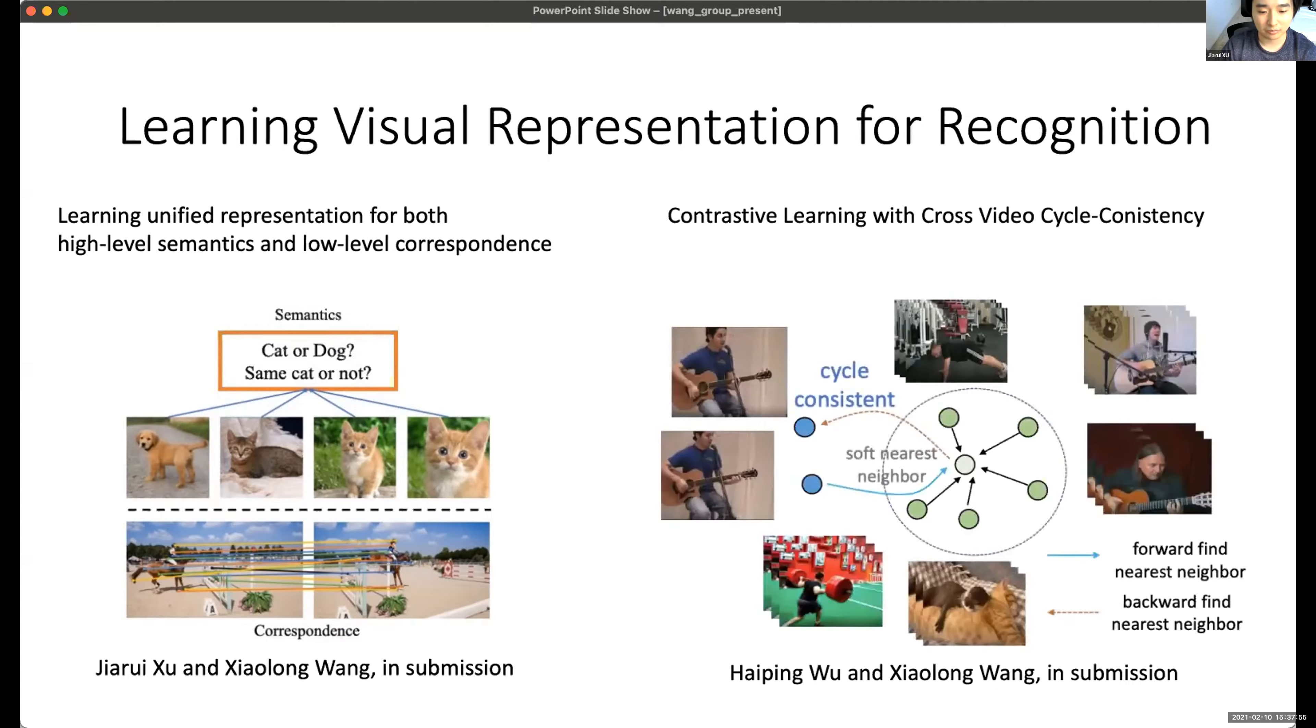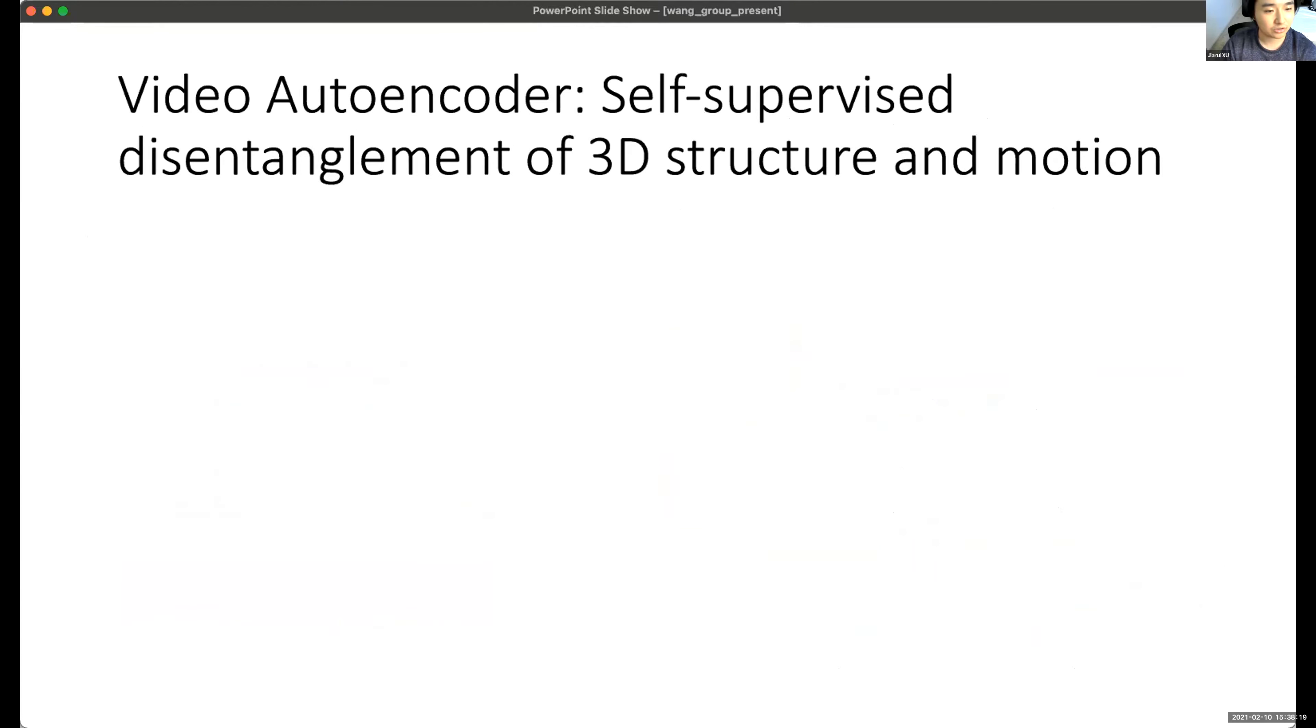And also, we have some video projects with contrastive learning, which is a very popular topic in the last year. And our proposed method could learn a better representation by cyclic contrastive learning. And this representation could be used for video object recognition and video action recognition.